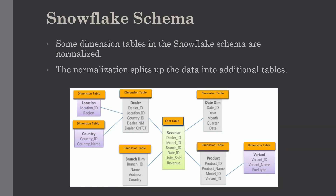Our next schema is the snowflake schema. Some dimension tables in the snowflake schema are normalized, meaning normalization splits up the data into additional tables. In this example, the central fact table is revenue, and due to normalization of the dealer dimension table, two additional dimension tables are created with location ID and country ID. Unlike the star schema, dimension tables in the snowflake schema are normalized. Similarly, the product dimension table is also split into another dimension table called variant. Due to normalization, redundancy is reduced, making it easy to maintain and saving storage space — this is the main advantage of snowflake schema over star schema.